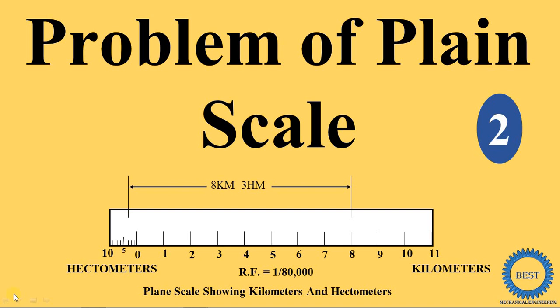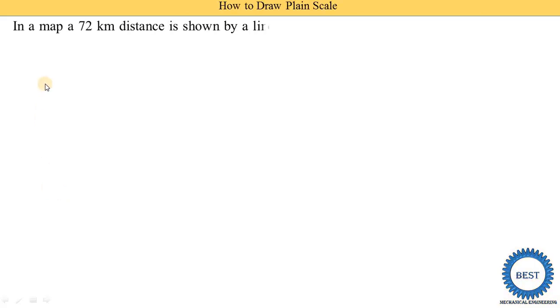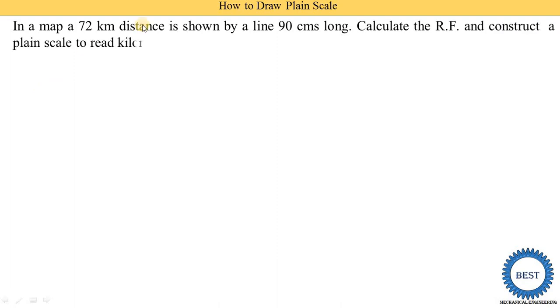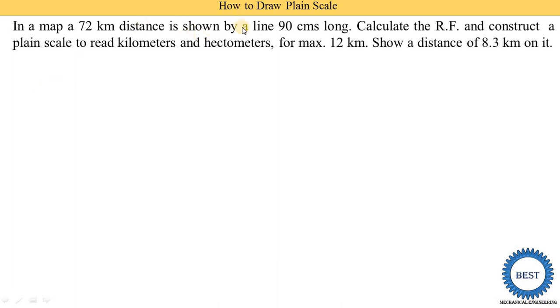In this video we solve a problem of plane scale. First, understand the problem statement: in a map, a 72 kilometer distance is shown by a line 90 centimeters long. Actual distance is 72 kilometers and the length of the drawing is 90 centimeters. Using these two values, we calculate the RF (representative fraction) and construct a plane scale to read kilometers and hectometers.